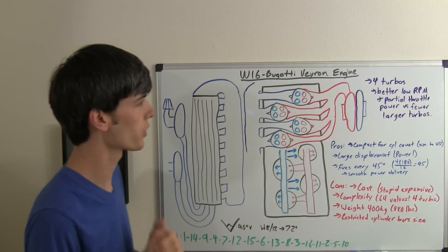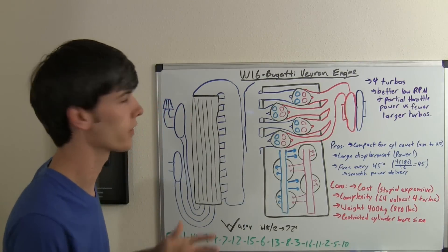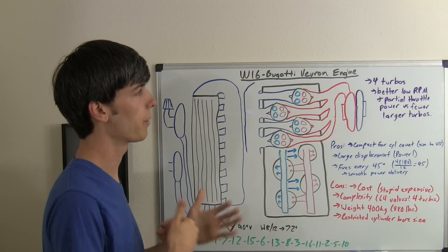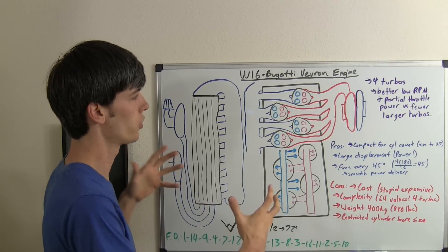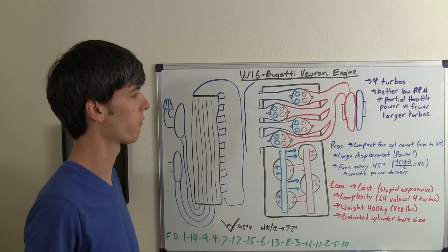So why would they use four turbos? Basically the reason Bugatti said they did this was because they could get better low RPM and better partial throttle power versus using two larger turbos, one for each side.